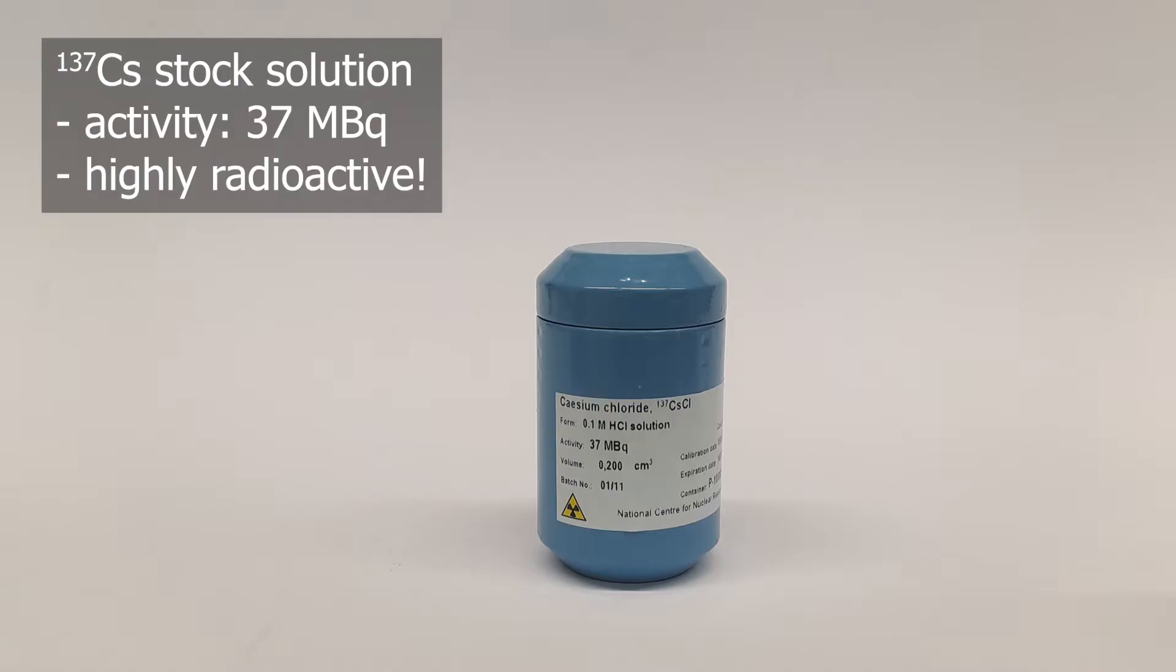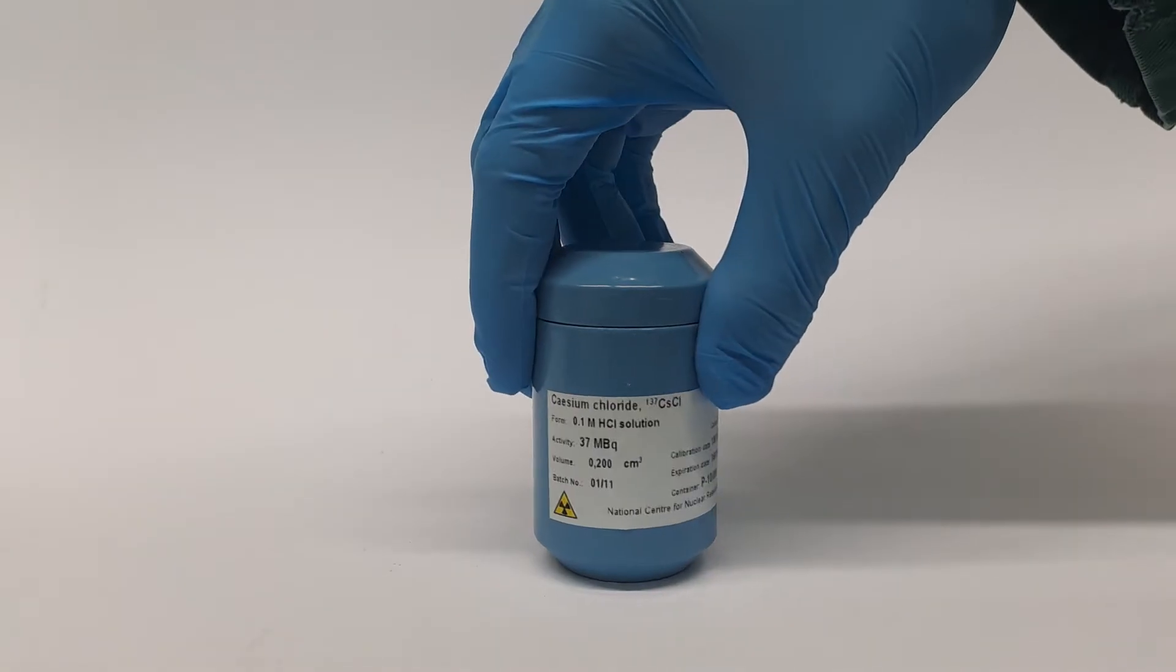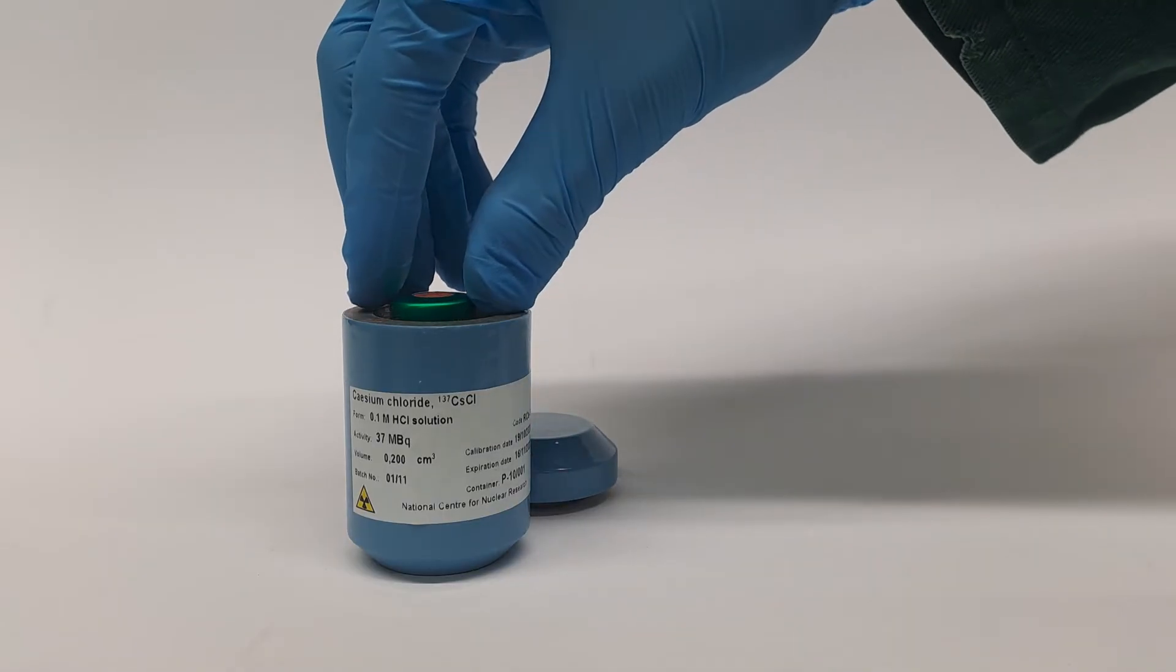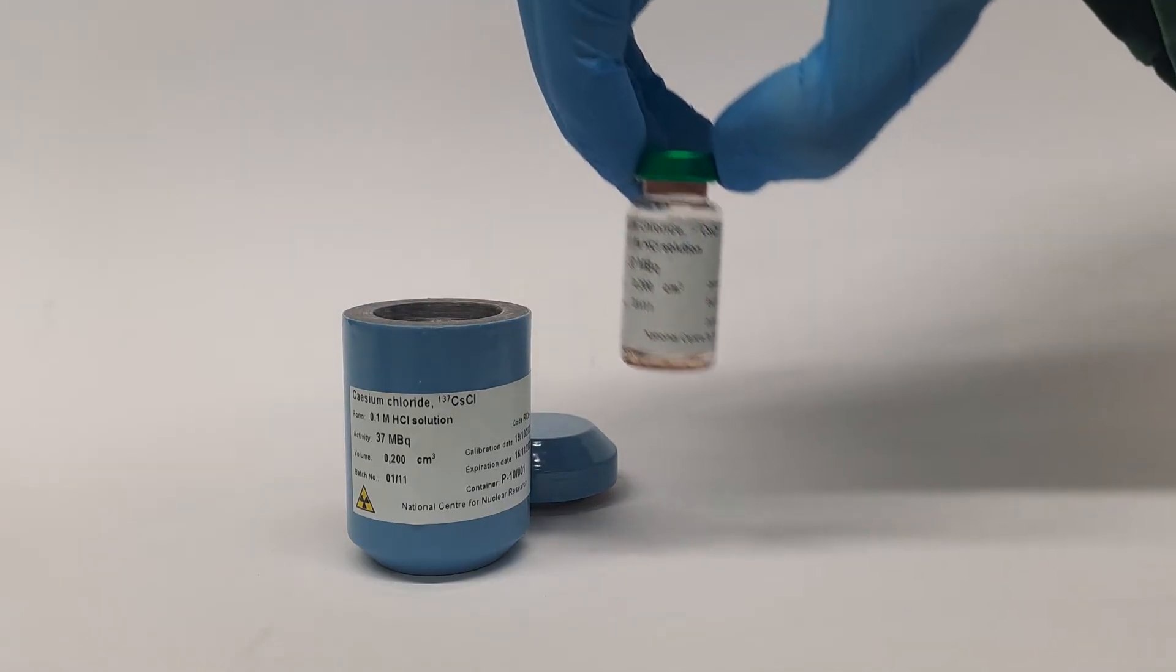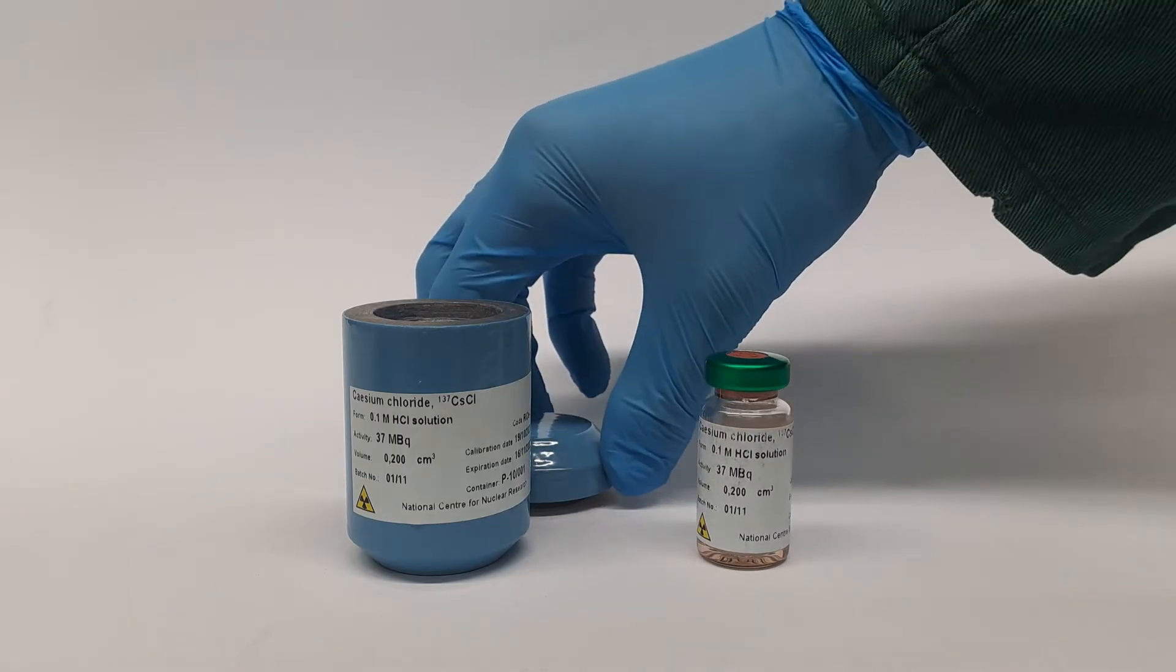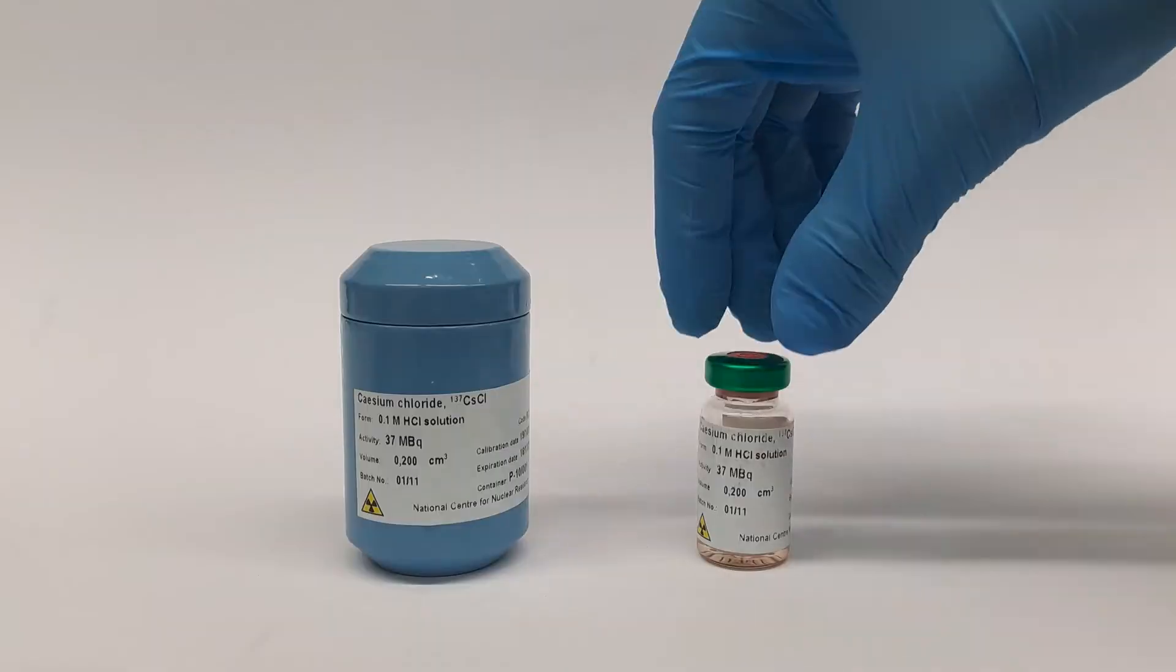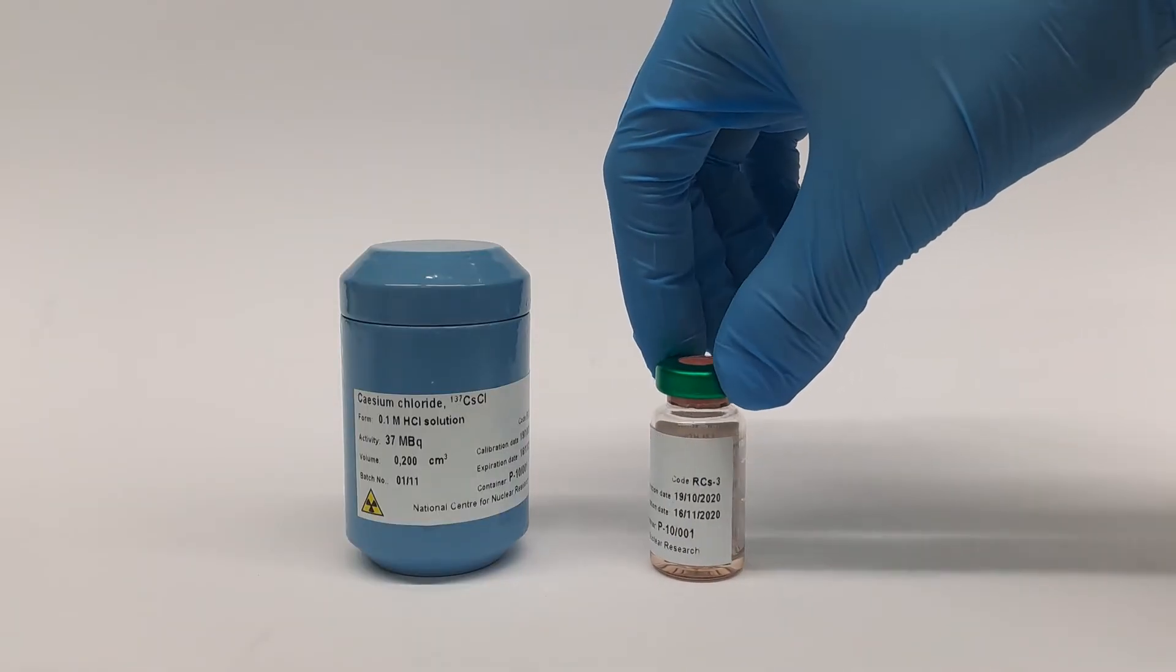We will measure its radioactivity in a moment. But first, let's talk about this very sample. It's a cesium-137 cesium chloride solution in a 0.1 molar hydrochloric acid. As you can see, most of the solution has been used up and what it has been used for will become clear in the end of the video.